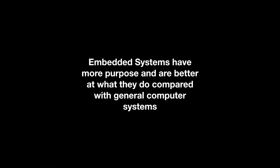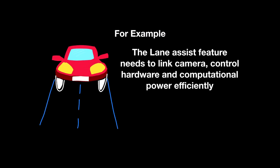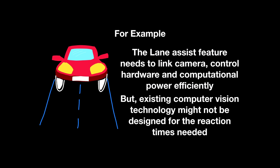There are performance, cost, reliability, design complexity, and many more reasons to consider using an embedded system rather than a general-purpose computer. For example, consider the lane assist feature. This needs to link camera, control hardware, and computational power efficiently. If the lane assist is too slow to react, it could cause an accident, putting all road users in danger. In this case, existing computer vision technology might not be designed for the reaction times needed.